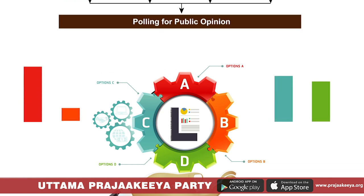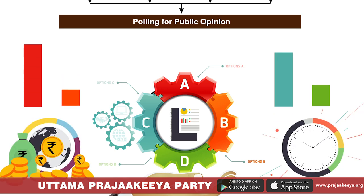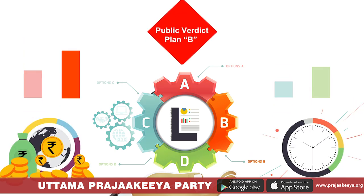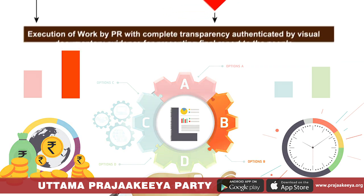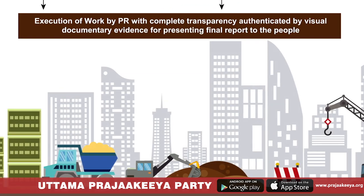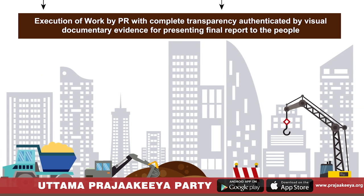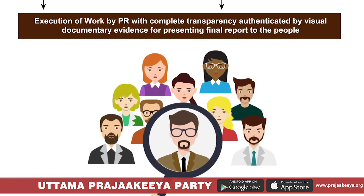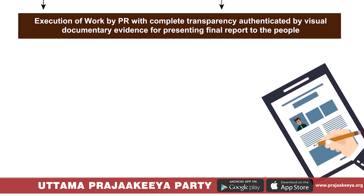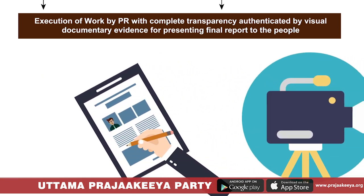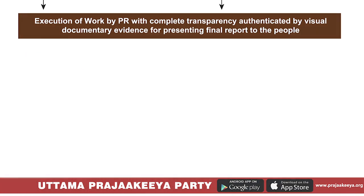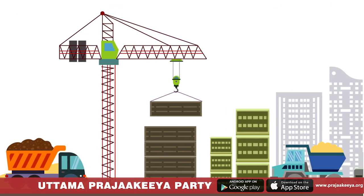People will have to evaluate all the details and different proposals and vote for one proposal. If there are maximum votes for one — for example B — the people's representative will take action to implement the proposal alongside existing projects with complete transparency by observing all procedures systematically. Once the project is completed, the people's representative has to keep all documents and visual evidences ready to present a final detailed report to the public.